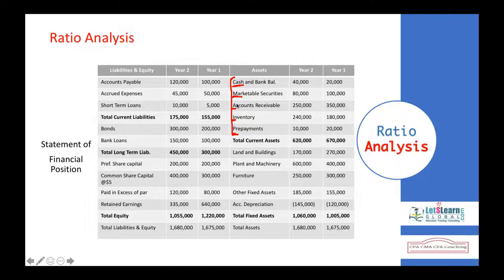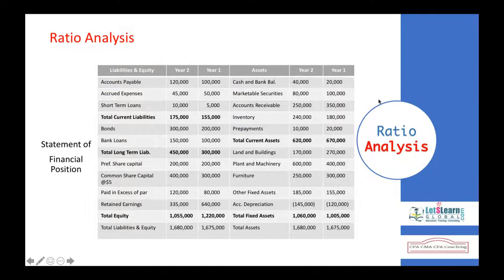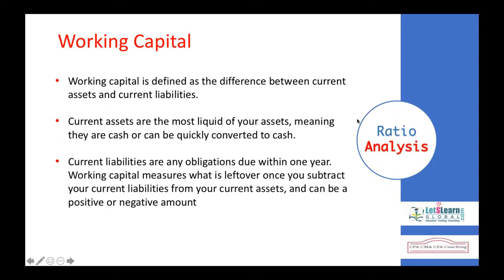Let's begin with working capital. Working capital is the amount required to be maintained in the business to operate on a day-to-day basis. It is the difference between current assets and current liabilities. Checking our balance sheet for year two and year one, the current assets include cash and bank balances, marketable securities, accounts receivable — presented in a liquidity format.